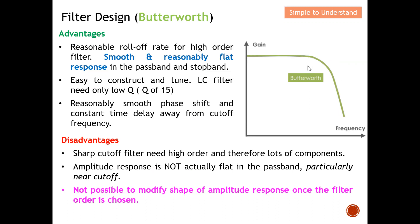The disadvantage is that a sharp cutoff filter needs a higher order and therefore many components. The amplitude response is not actually flat in the pass band, particularly near the cutoff — if you zoom in, you can see a little ripple near cutoff, though it is still considered relatively flat. It is not possible to modify the shape of the amplitude response once the filter order is chosen — this method is quite rigid. Once you choose the number of orders, you can't further improve the steepness, so the filter order is the backbone of the Butterworth design.